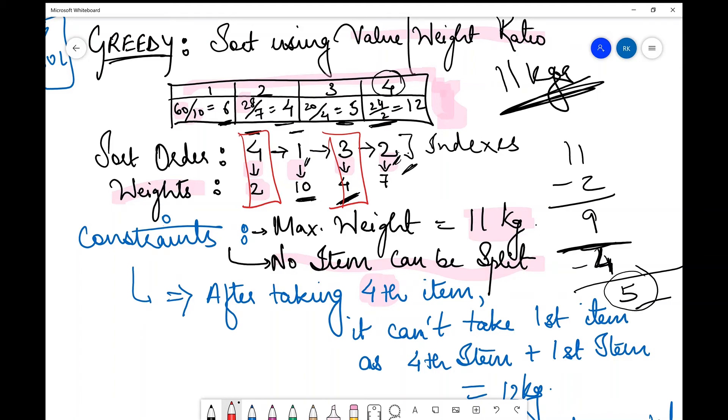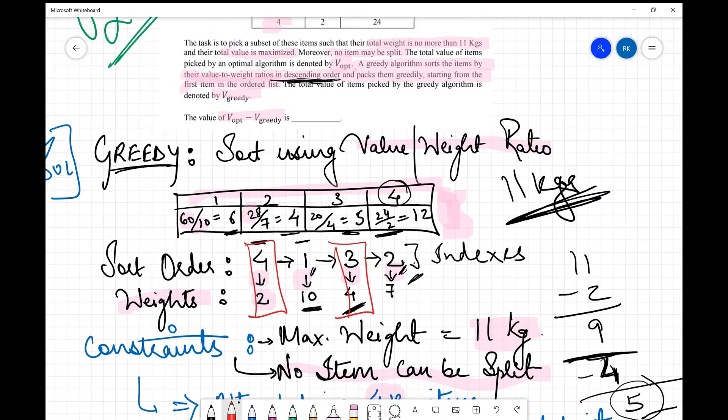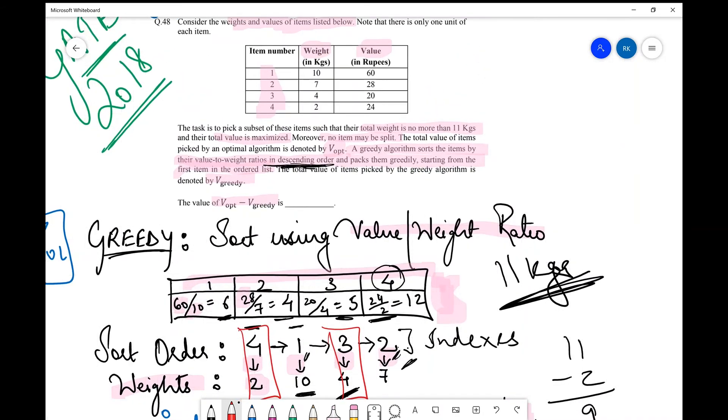Now next thing is just to sum up the values corresponding to these items. So you can either check the table or also this table. So we'll have a clearer look over here. Third and fourth item, the values are 20 and 24 in rupees. So the V_greedy that you had to compute, V_greedy if I write it over here, greedy is 20 plus 24 which is 44 rupees.